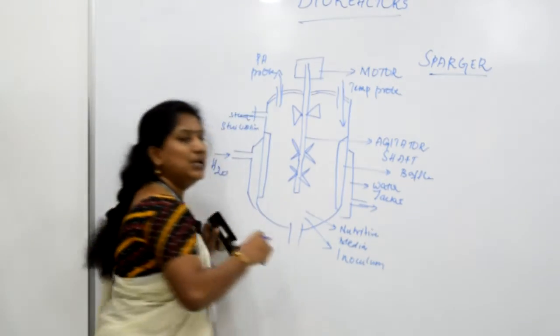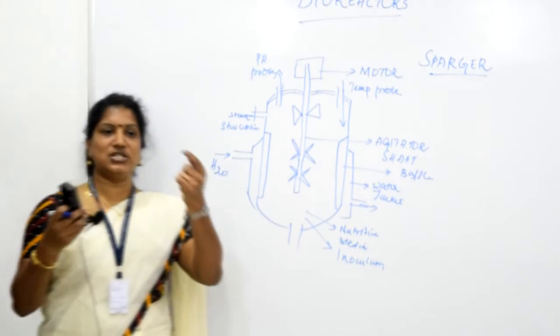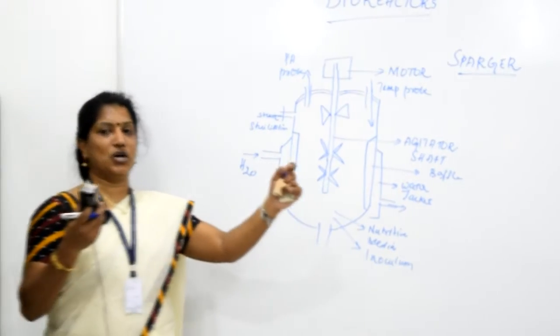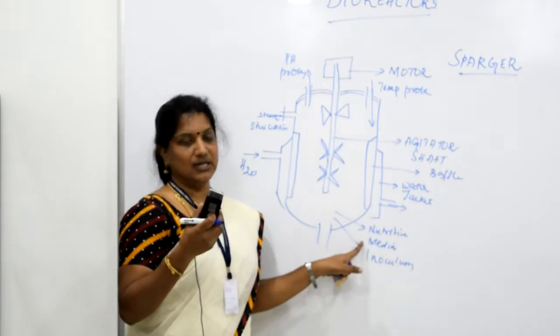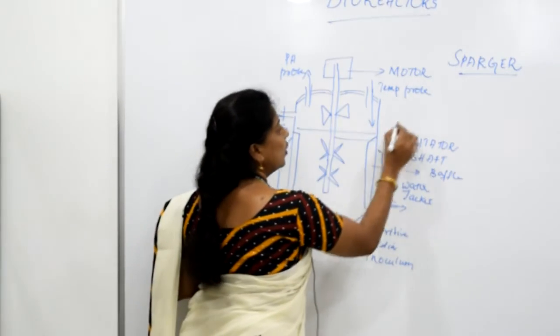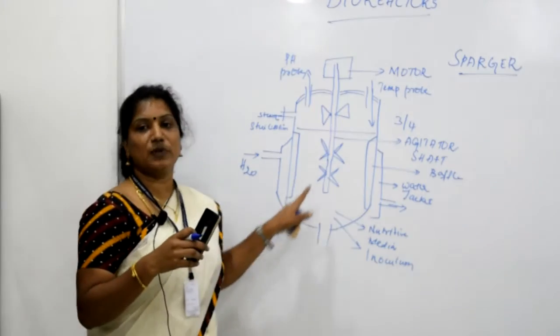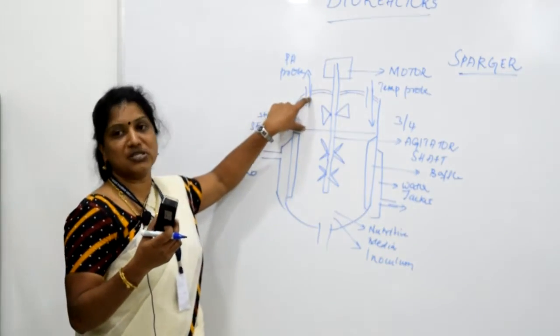What do you mean by inoculum? Inoculum is a small substance from the pure culture. You are just taking a small substance which contains some microorganisms from the pure culture and you are going to inoculate it in the nutritive media. When you are adding the nutritive media, the nutritive media should be added only to three-fourth of your bioreactor. That is 80% of the bioreactor should be filled with the nutritive media. The remaining 20% should be left free.